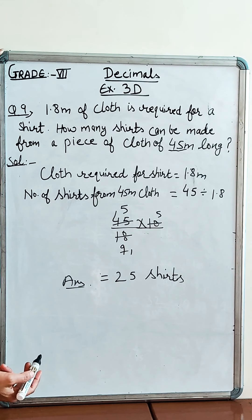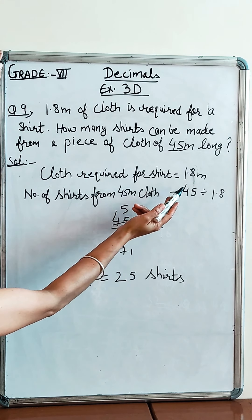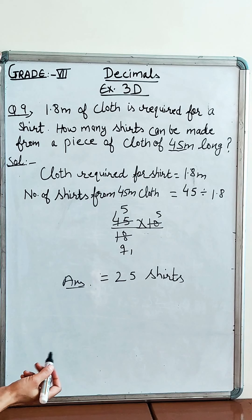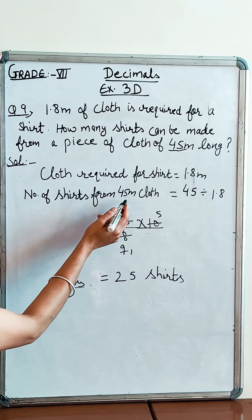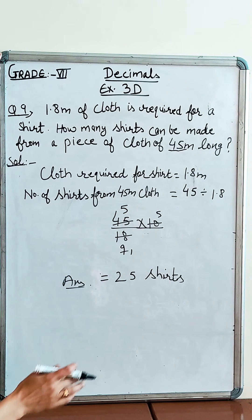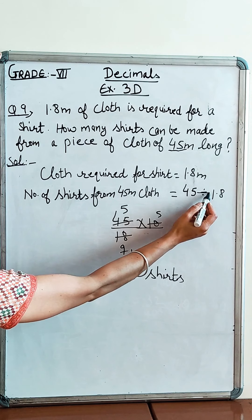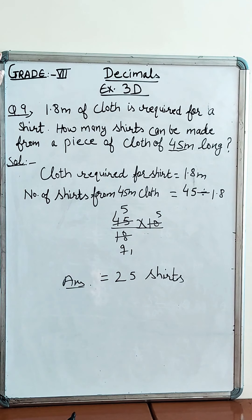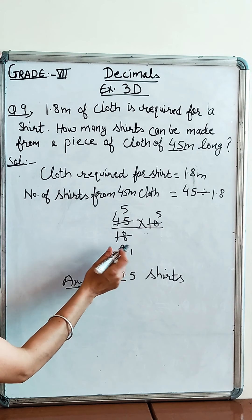Let us divide by the length of one shirt. Total length divided by length of one meter cloth. So cloth required for one shirt is 1.8 meter. Now what do you have to do? Number of shirts from 45 meter cloth is 45 divided by 1.8.